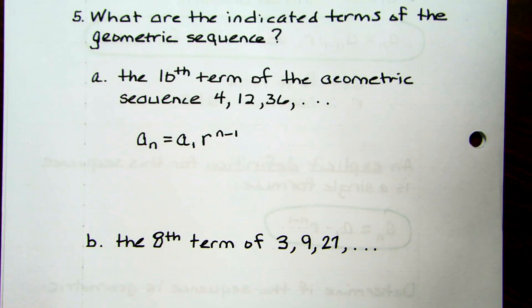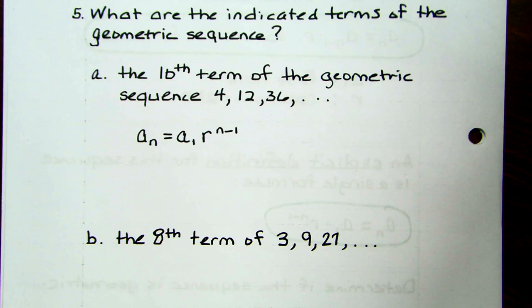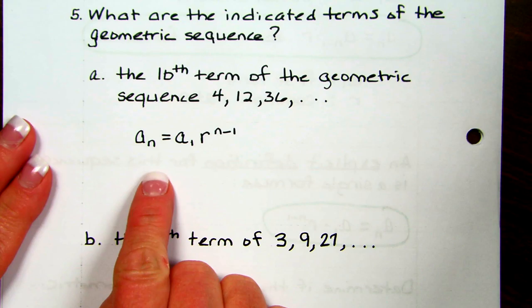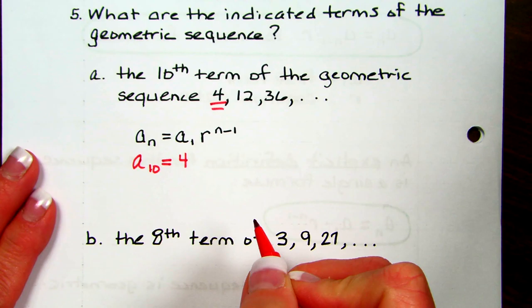Look at number 5: what are the indicated terms of the geometric sequence? We want to find the 10th term. If we want to find the 10th term, we're going to substitute n — because A sub n means the nth term. So this is the 10th term. Then we need our initial amount, which would be 4 — that's our first term.